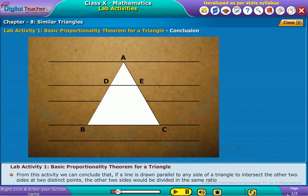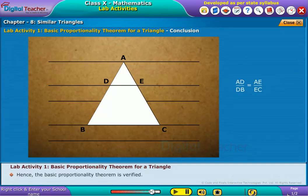From this activity, we can conclude that if a line is drawn parallel to any side of a triangle to intersect the other two sides at two distinct points, the other two sides would be divided in the same ratio. Hence, the basic proportionality theorem is verified.